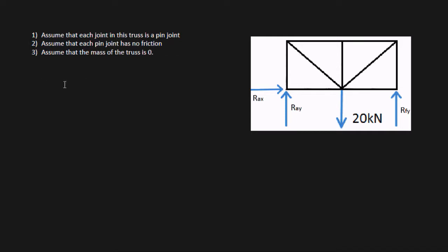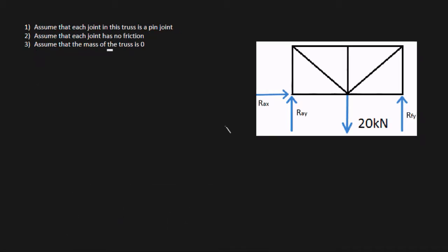With these three assumptions, we can prove that the internal forces within each of these members is going to be purely in the axial direction. All right, so let's get involved in a free body diagram. Okay, so in order to do that, let's label a few points. I'll call this point A, B, C, D, E, and F.